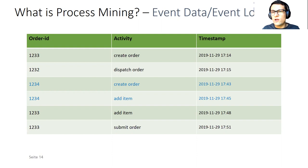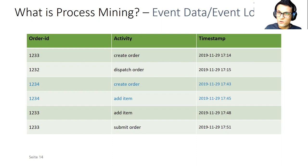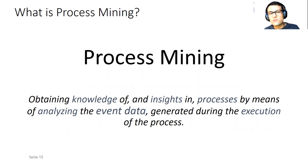In the remainder, when I refer to a row in this table, I will call it an event. An event simply represents the execution of an activity. I differentiate between an event and an activity because for a specific order there might be a repetition of activities — for example, there might be multiple 'add item' activities in the context of a certain order. Events are basically the things that happen and describe the execution of activities. When I go through this event data set, I can see what happened for a specific order at which point in time.